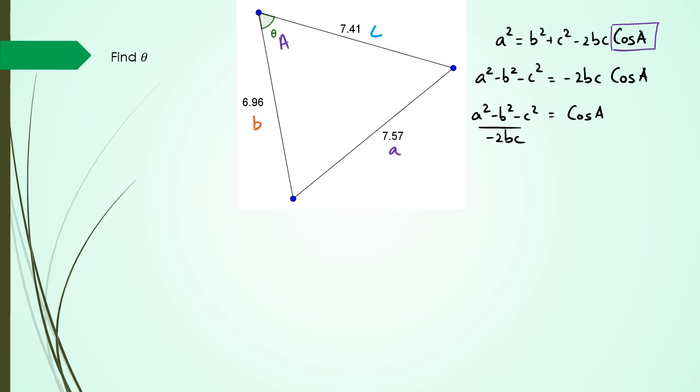Now remember, in some of your formula sheets it could be written as cos A = (b² + c² - a²) / 2bc. Same thing, you can choose whichever one you want to work with. I'm going to work with this one here.